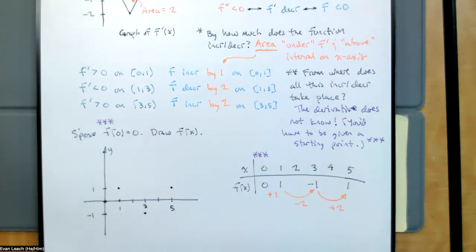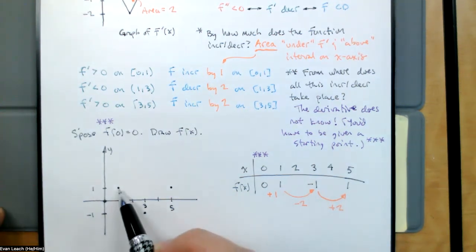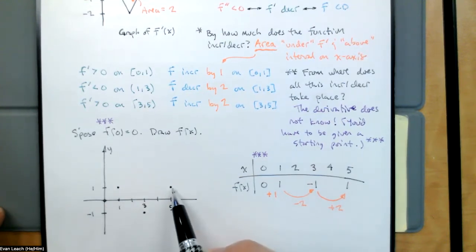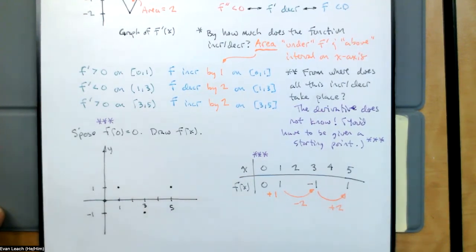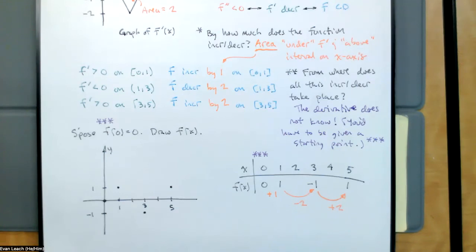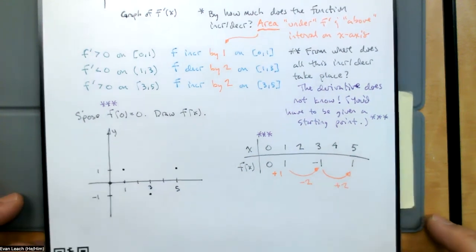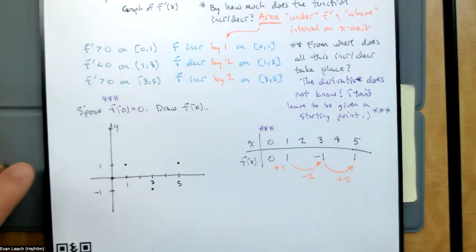So we can see generally what's going on here — it goes up, then down, then up again. We don't want to just connect these with lines because we have additional information. We not only have the direction of the function, we also have the concavity of the function.